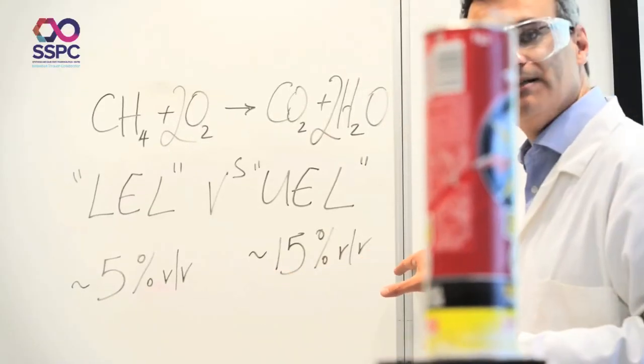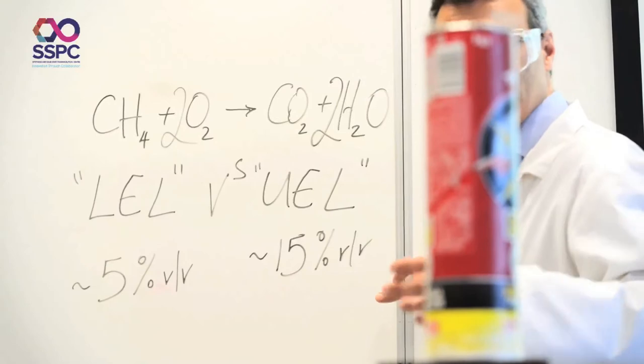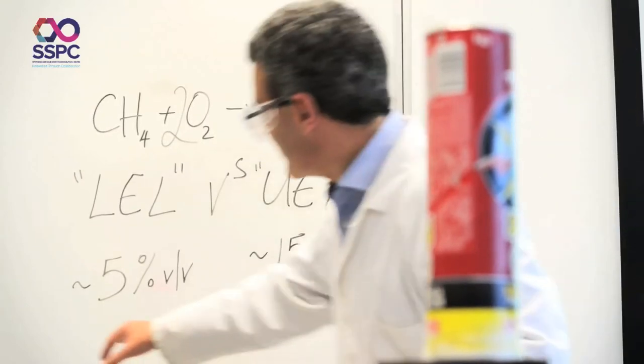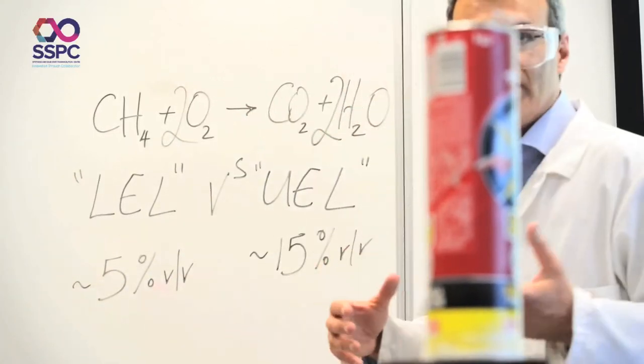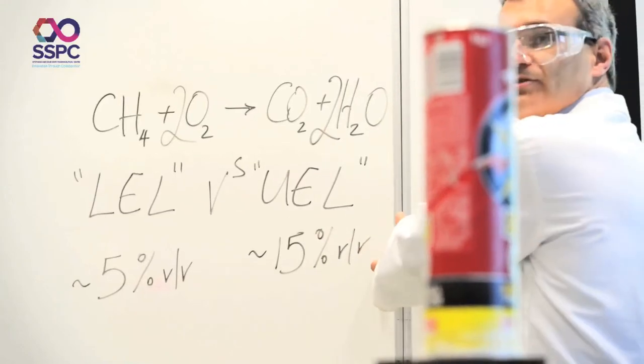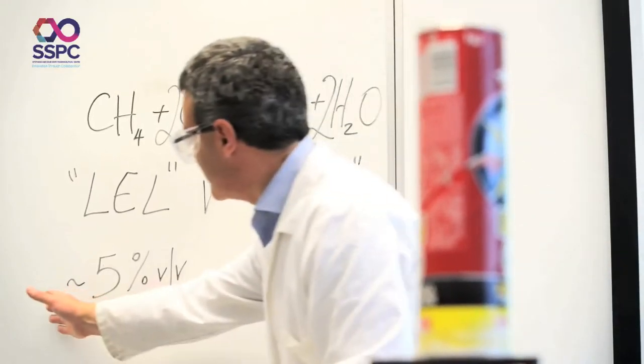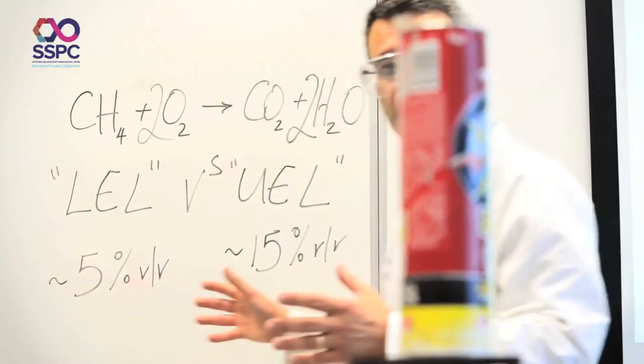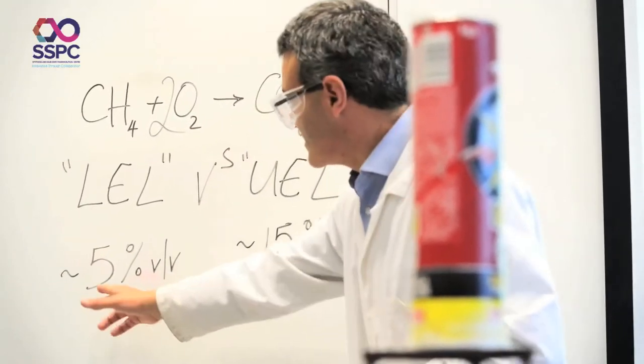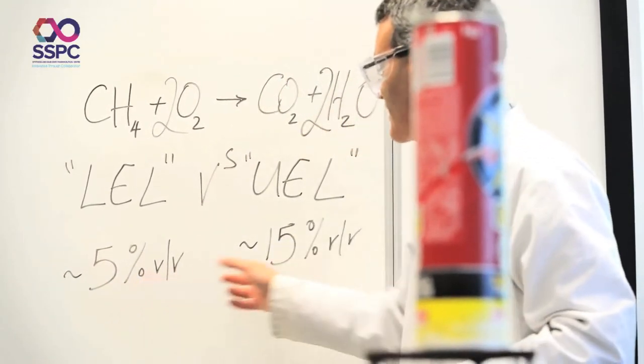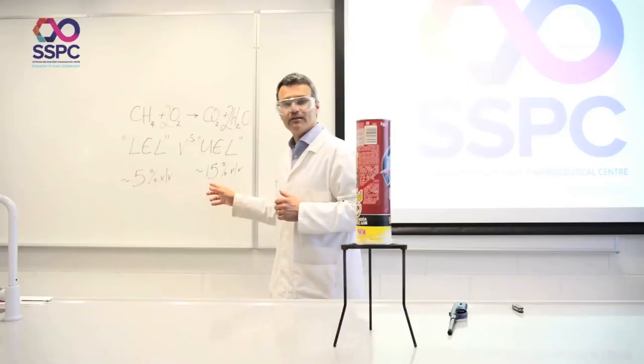If you've greater than 15 percent methane in the air, it just burns. If you've less than 5 percent methane in air, it'll just burn inefficiently. So here you have too much fuel, and here you don't have enough fuel for an explosion. So this is the sweet spot for methane, between 5 and 15 percent volume in air you'll get an explosion.